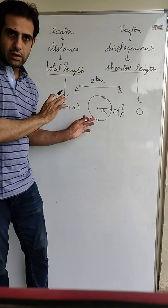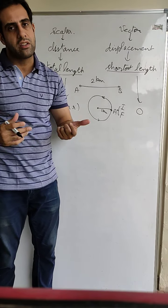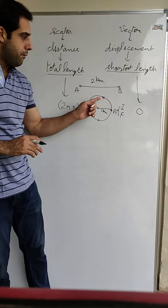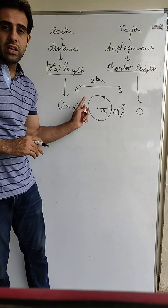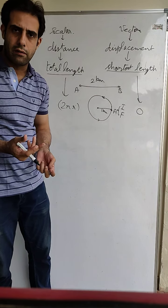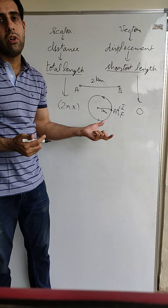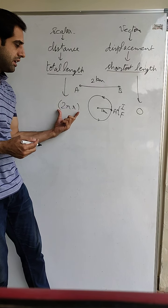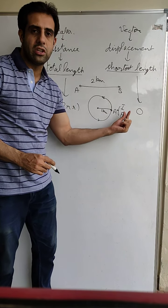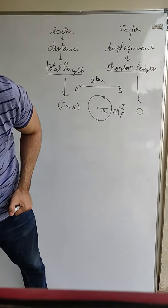I hope that is getting clear. In a straight line, distance and displacement do not have any differentiation — they are the same. But when the path is curved or circular, they will have different values. The distance is the total path length, so 2πr, while the displacement is zero because the initial and final positions are the same.